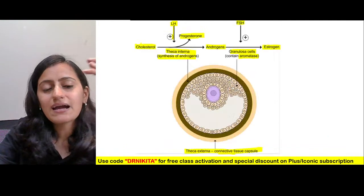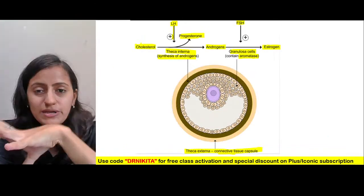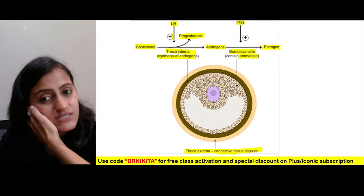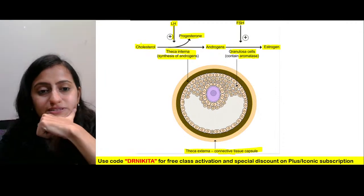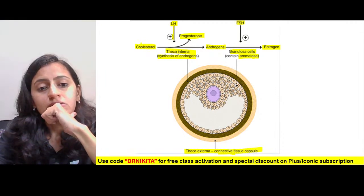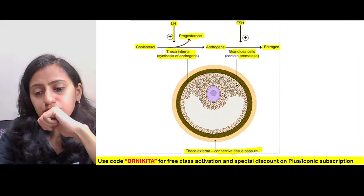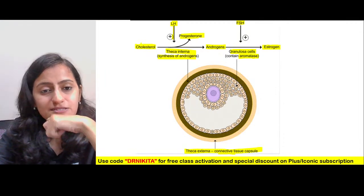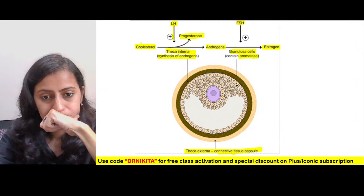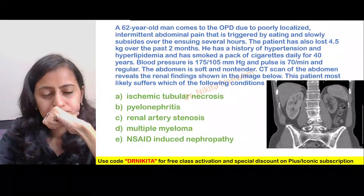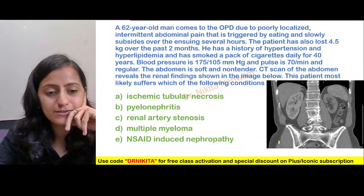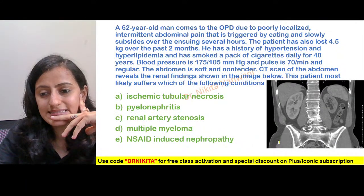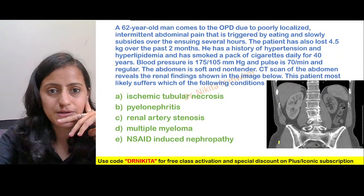Remember this important concept: theca interna produces androgens, which go to the granulosa cells and are converted to estrogen via aromatase. That was about question 4. Let's go to the next question — please read and tell me your answer.